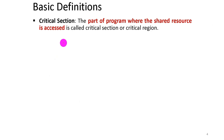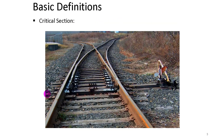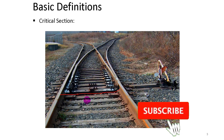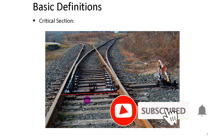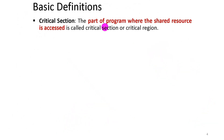A critical section is a part of the program where the shared resource is accessed. We call it the critical section, also known as the critical region.